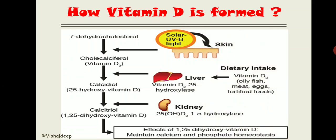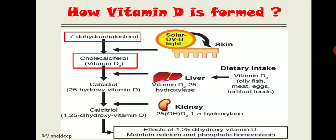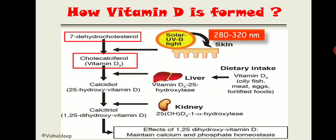7-dehydrocholesterol is present in the Malpighian layer of the skin. When exposed to solar UVB light, it converts to cholecalciferol — vitamin D3. The exact wavelength required is 280 to 320 nanometers. Vitamin D3 is not the active form; it is a precursor.